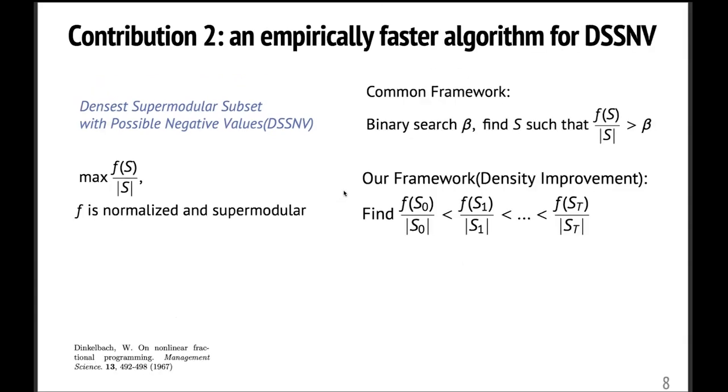Our second contribution is that we propose an empirically faster algorithm for DSSNV. So DSSNV is basically maximizing some fractional, and the classical approach for this fractional programming is to binary search the answer beta and then turn this maximization problem into a decision problem. So now we only need to efficiently answer the decision problem that whether there exists a vertex set such that f(S) divided by the size of S is at least beta. If we can answer it efficiently, then we just binary search beta, and when the search range is really small, then we can terminate the procedure.